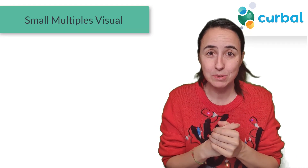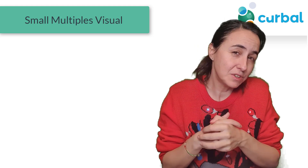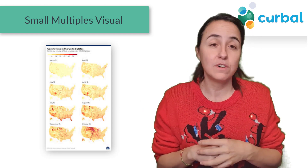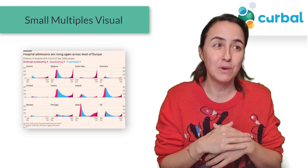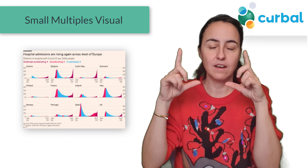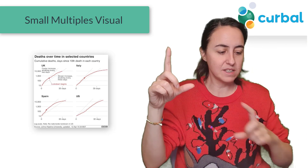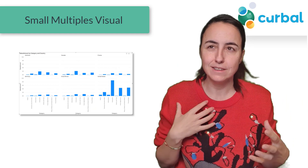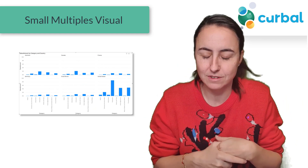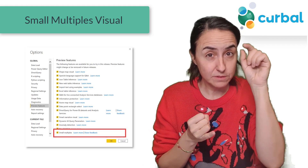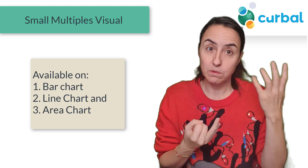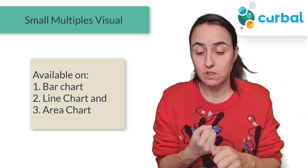Moving on to small multiples. Small multiples is a visualization that's quite popular in business intelligence scenarios where you want to visualize, for example — and with COVID there have been many visualizations showing infections per country side by side. So this is a really neat and timely update. It's a preview feature, you have to tick the box to enable it. It is available on bar, line, and area charts, with more visuals to be added later.